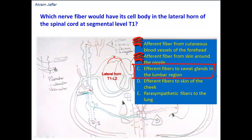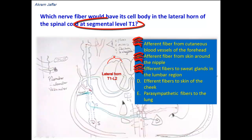Option C: efferent fibers to sweat glands in the lumbar region. Sweat glands are supplied by sudomotor fibers, which are sympathetic fibers. But in the lumbar region, the origin of these sympathetic fibers is derived from lower thoracic segments of the spinal cord, and not from the T1 level segment of the spinal cord.